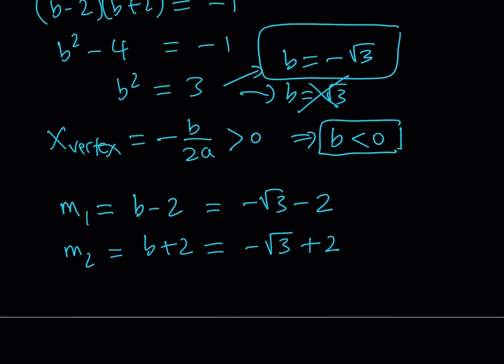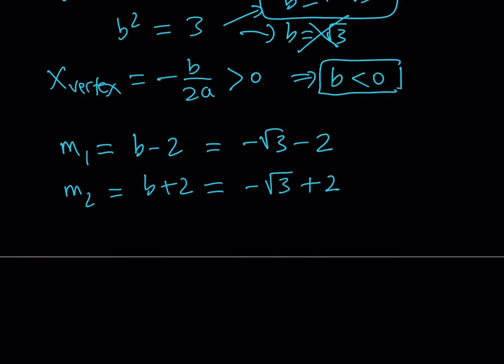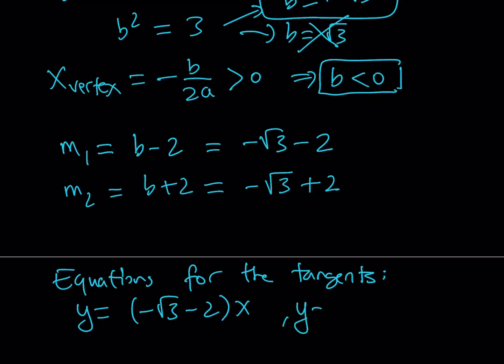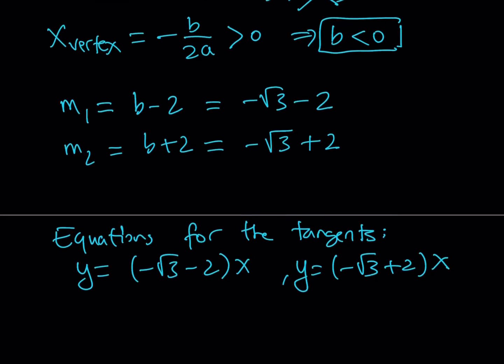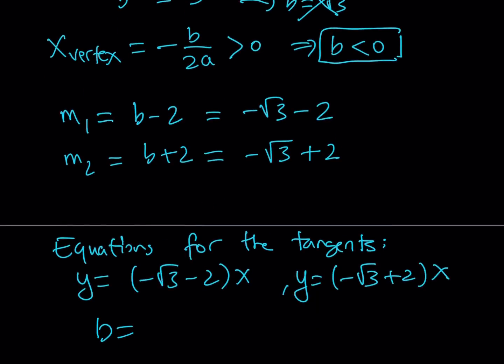So this gives me the slopes, and from here I can basically write the equations of the lines, and then I already got the b value, and that's pretty much everything I need. Let's go ahead and write down the equations. So the equations for the tangents is then y equals negative root 3 minus 2 multiplied by x. And the other equation is going to be y equals negative root 3 plus 2 all multiplied by x, because the equation was y equals mx, remember? And my b value was negative root 3.